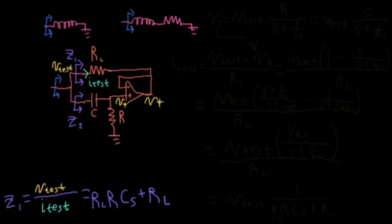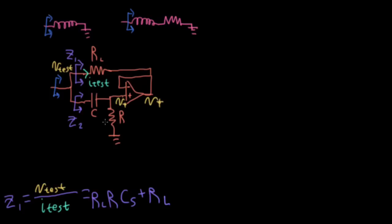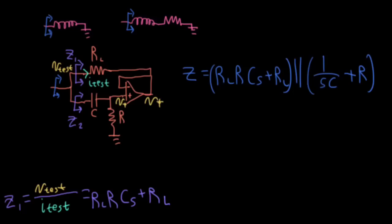The actual impedance is going to be this Z1 in parallel with Z2. So I'll have Z1, which is RL, RCS plus RL in parallel with the impedance seen looking down this direction. So that's going to be 1 over SC plus R. So if we can ignore this second term, and I'll talk about that in a second, and equate this RLRC with L, we see that this expression forms an inductance of L, with L being RLRC, in series with a resistance RL.